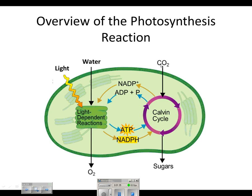In the stroma, we have the Calvin cycle, which does not require light — sometimes called the dark reaction or light-independent reactions. We input carbon dioxide and the end result is sugar. A couple other compounds are exchanged between the two reactions: NADP+ and ADP+P come from the Calvin cycle, while the light-dependent reaction produces ATP and NADPH, which carry energy. They taxi energy over to the Calvin cycle, where it's used, then return to pick up more energy.